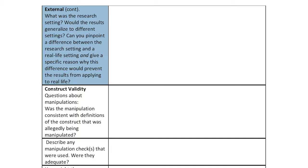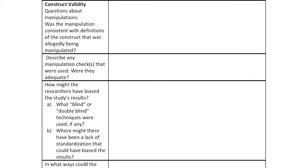You'll also read through the method section for what the research setting looks like. Those types of details you'll find there. Construct validity is about manipulations and measures. Note that your template might have fewer or more questions than the one shown here — I'm just going to talk about some of the basic things that we have in all of our templates for critiquing a journal article.